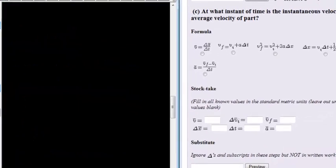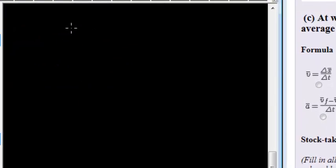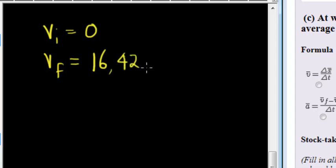So what values do we have? We have the initial velocity, since it's a falling object, is equal to 0. And we also have the final velocity, which we want to be 16.42 meters per second.